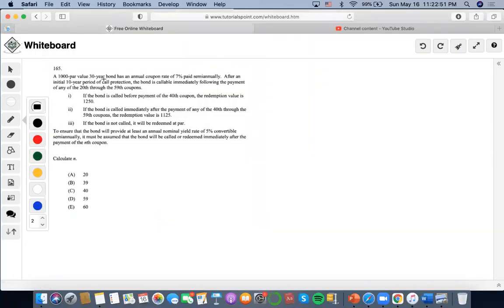Okay, so for this one, it says a thousand-dollar par value 30-year bond has an annual coupon of 7% paid semi-annually. After an initial 10-year period of call protection, the bond is callable immediately following the payment of any of the 20th to 59th coupon. They give us these scenarios, and we want to ensure that the bond will provide at least an annual nominal yield of 5% convertible semi-annually.